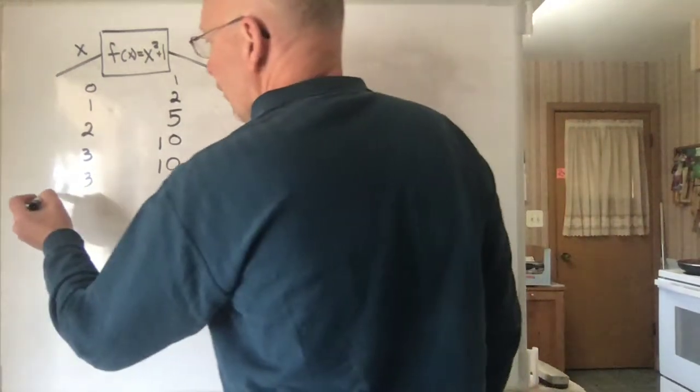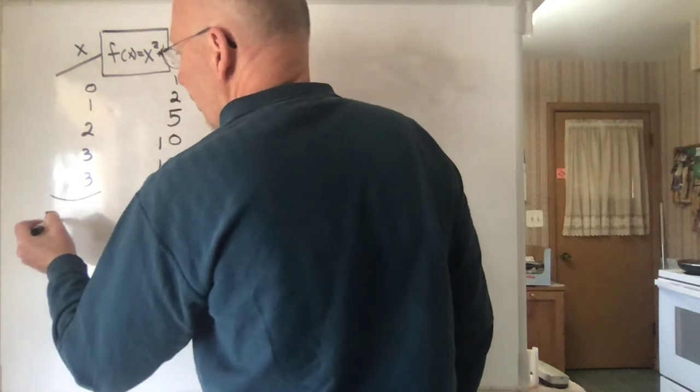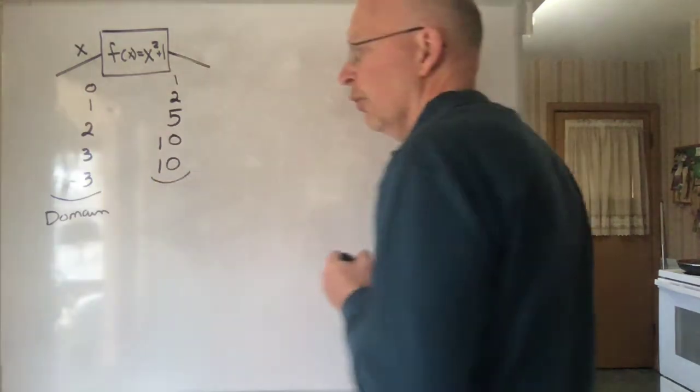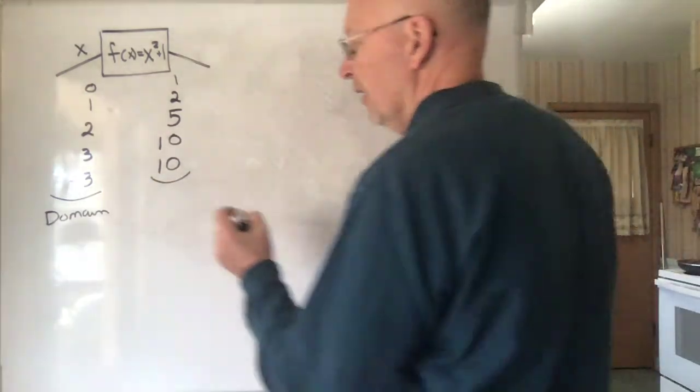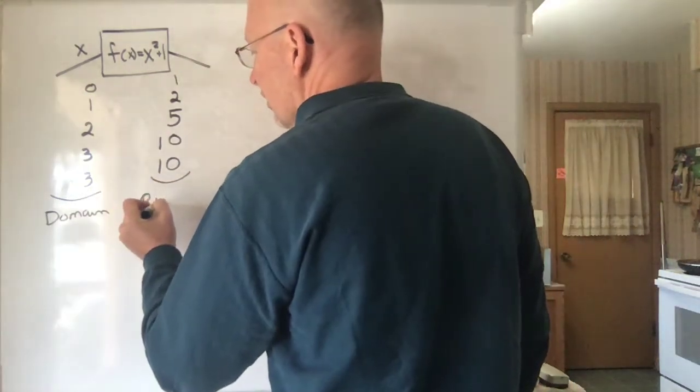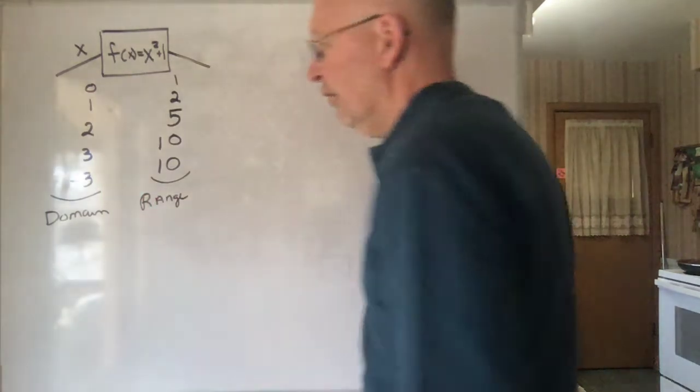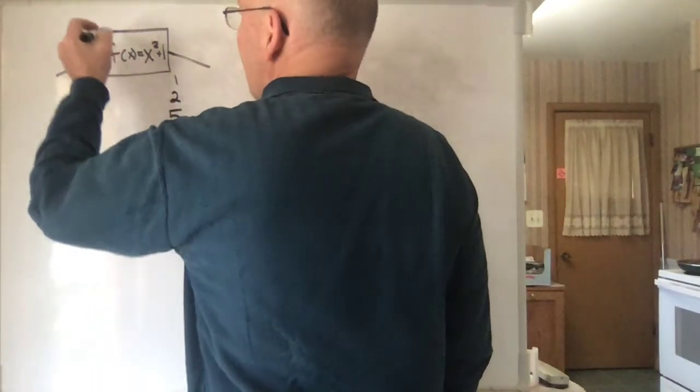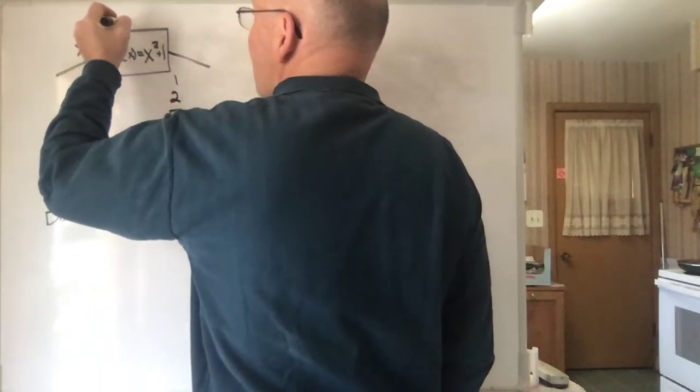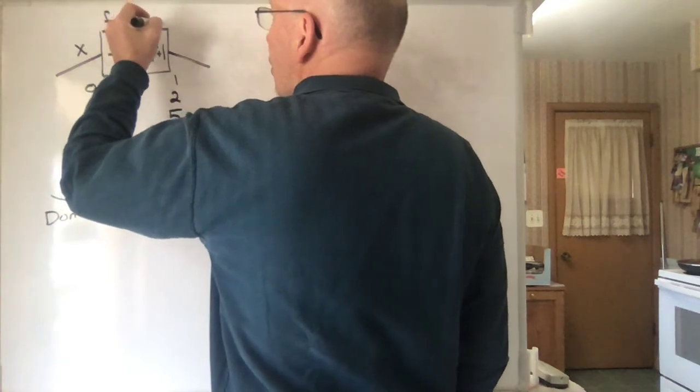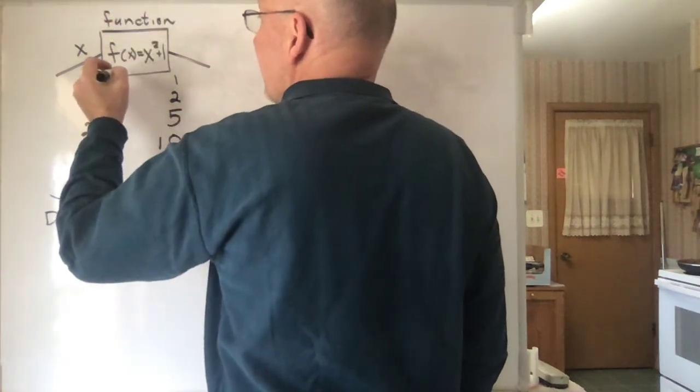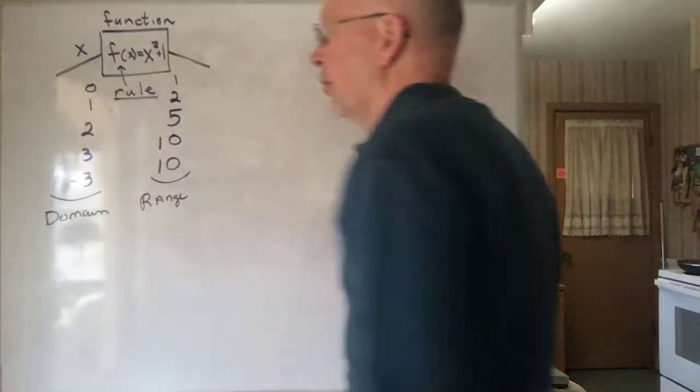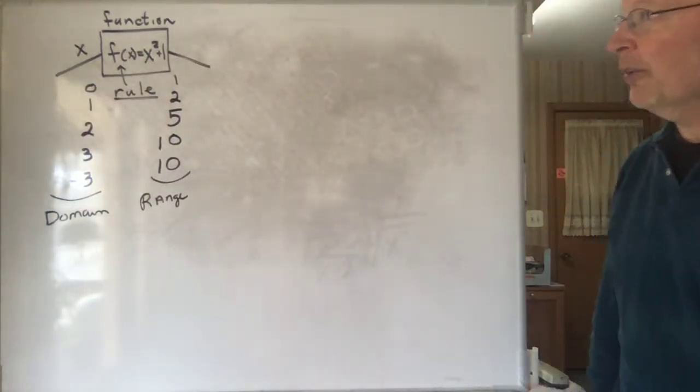All the numbers that you put into a function is called the domain and all the numbers that come out when you throw all the possible numbers in is called the range or image. So, those are a couple keywords and this is the rule of the function. The rule is basically the thing that tells you what the function is doing to each number of the domain. So, those are the parts of a function.